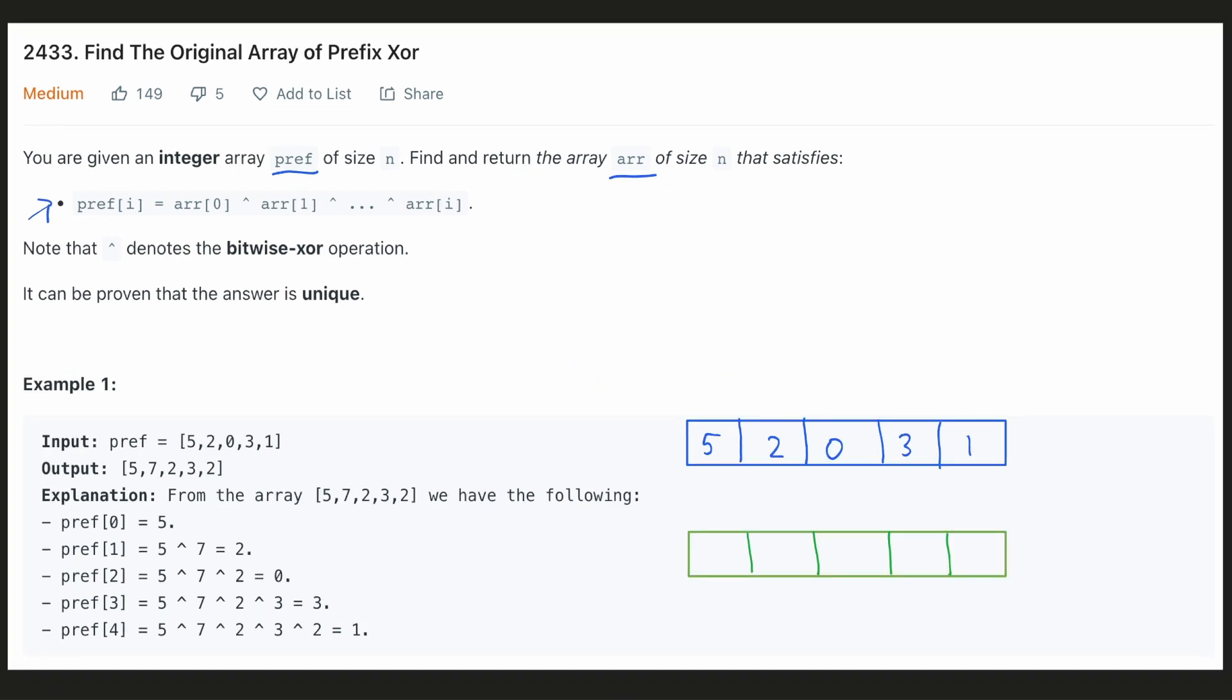Let's look at the example given in the question. Let's assume that there is an element 0 just before the start of the array. We have kept this number as 0 because 0 xor any number will result in that number itself. Let's see how the original array is being generated from the prefix array.